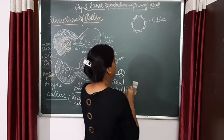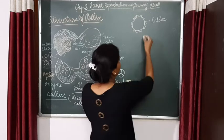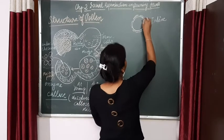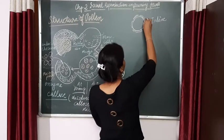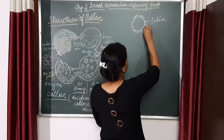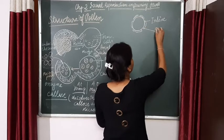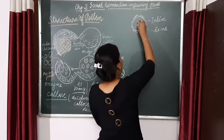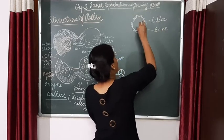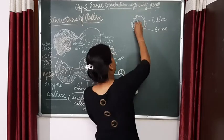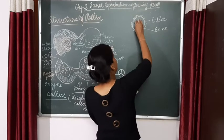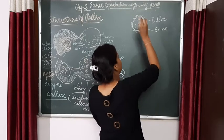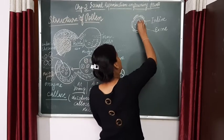This is called as exine. If you remember, I told you about sporopollenin. So this exine — the inner layer is the intine and this outer layer is called as exine, and here the nucleus is present with the dense cytoplasm.